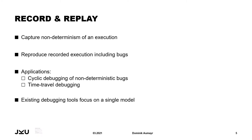These bugs are also very hard to debug because the classic cyclic debugging approach — where the program is debugged multiple times and stepping operations are performed — doesn't work because the next time the bug occurs is not guaranteed. One strategy to address the problem of non-deterministic bugs is record and replay. Record and replay is based on capturing the non-determinism of a program execution in a trace. This trace can then be used to guide other program executions to produce the same results. However, existing record and replay tools focus only on a single concurrency model.